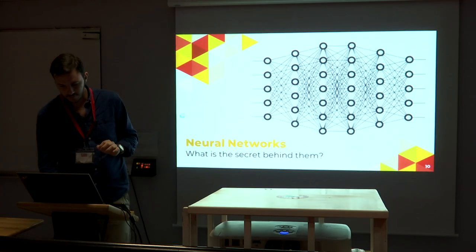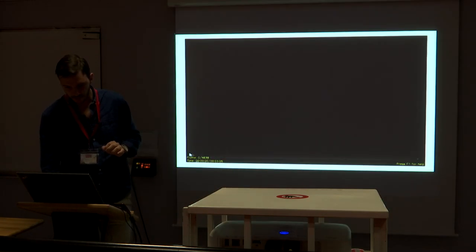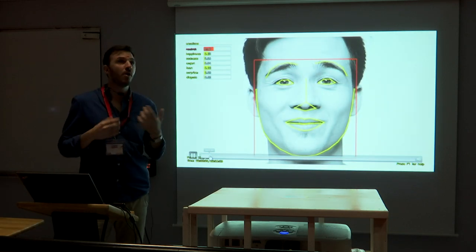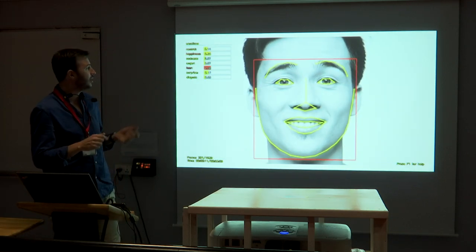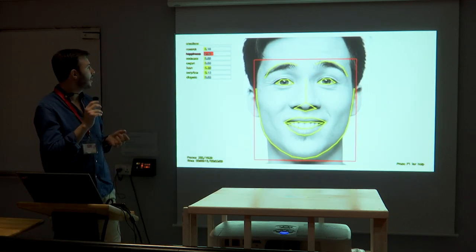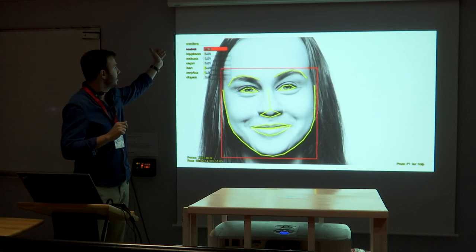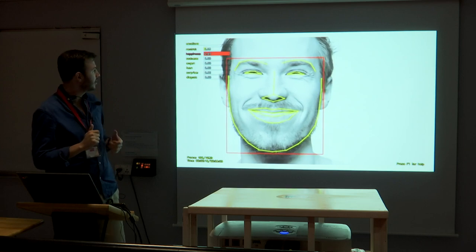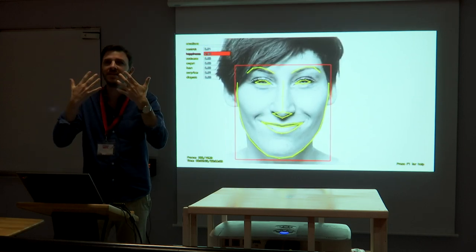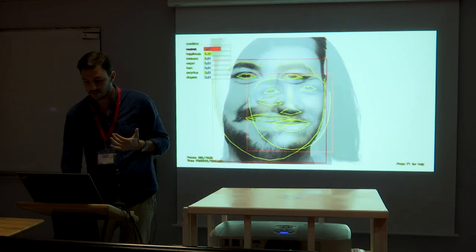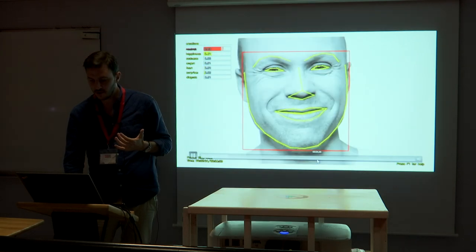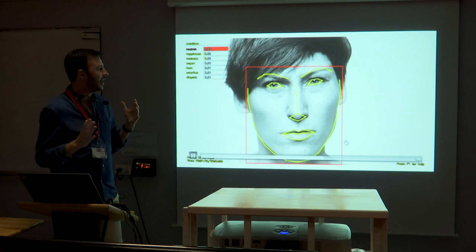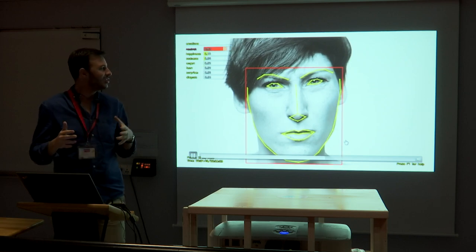Another problem is dealing with emotions. You can have a camera pointed at a person and the model will detect if he's happy, if he has regret, if he's angry, or if he's surprised — just by reading the emotions on his face. You can see: he is angry, he is surprised. It's pretty awesome what you can do.